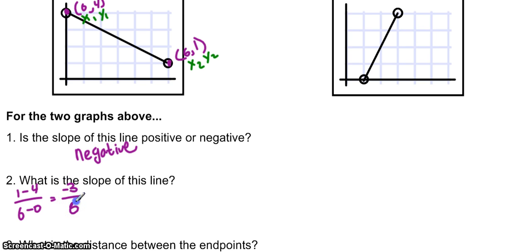We have negative three over six. Can we simplify that? We can to, let's see, one over two and a negative divided by a positive is a negative. So our slope is negative one half.